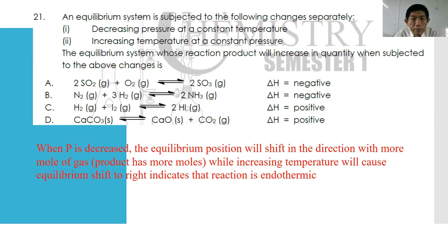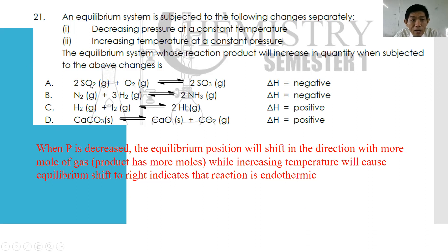Number twenty-one: an equilibrium system undergoes two separate changes — decrease pressure at constant temperature, and increase temperature at constant pressure. For which system does the reactant increase under both changes? Increasing temperature causing reactants to increase means the forward reaction is endothermic — eliminating A and B. For decreasing pressure to shift equilibrium right, the right side must have more total moles of gas. Option C: both sides have the same moles — eliminated. Option D: left side has 0 moles of gas, right side has 1 — so equilibrium shifts right when pressure decreases. The answer is D.